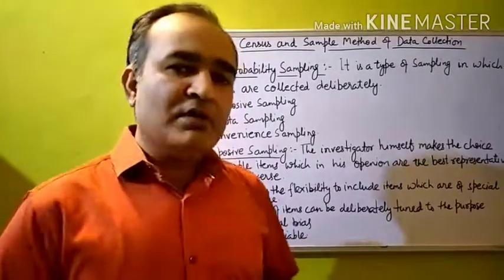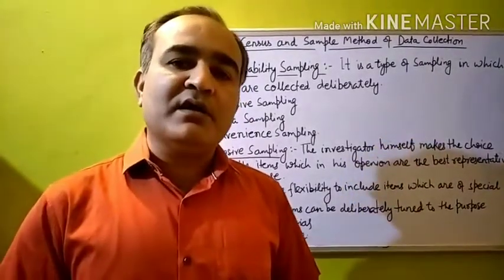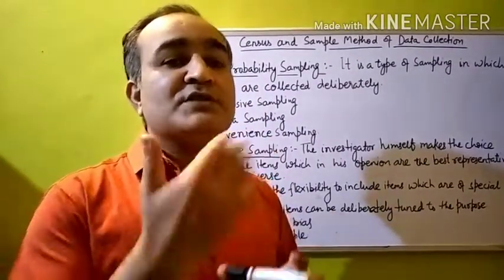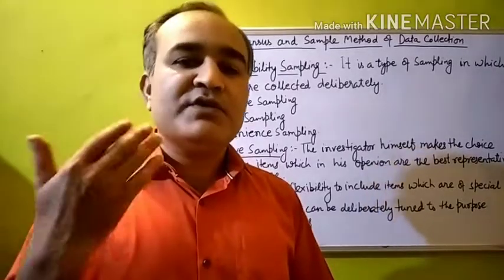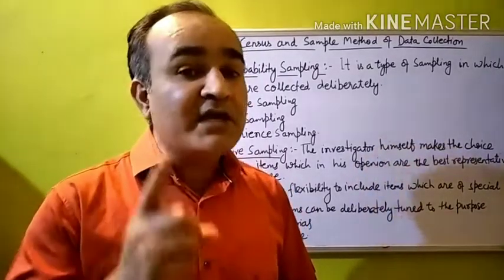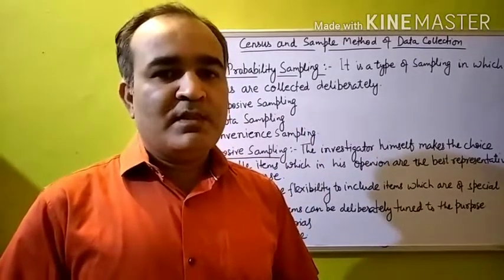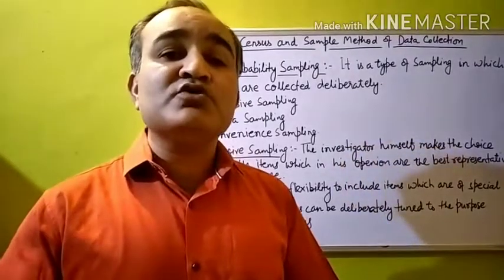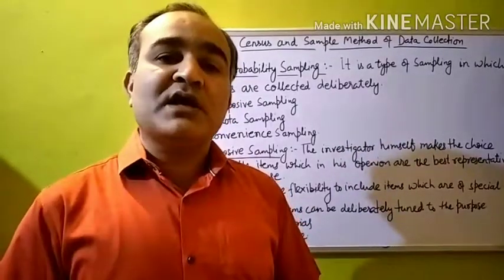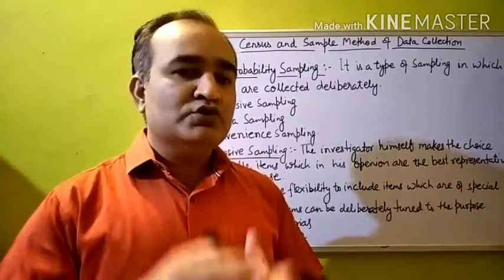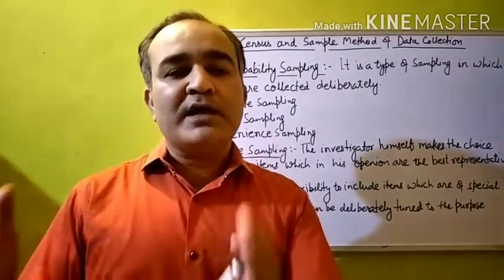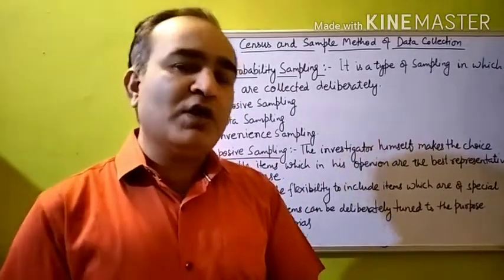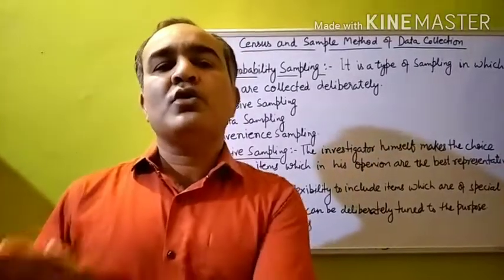The second demerit is that the data is not reliable. Whatever information the investigator fetches from this survey or investigation process, that data will not be reliable because the chances of biasness are very high. It is possible that the investigator has picked a particular biased item, so the reliability of the actual data we need to obtain will be affected.